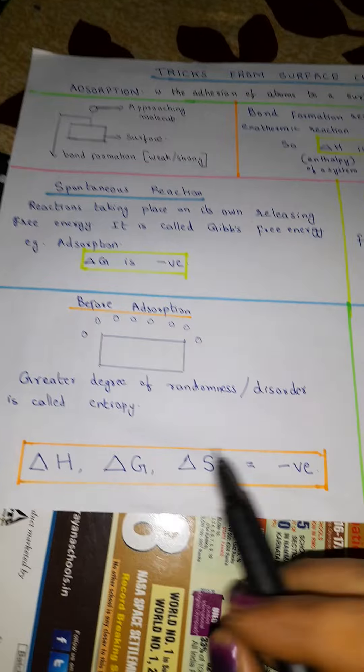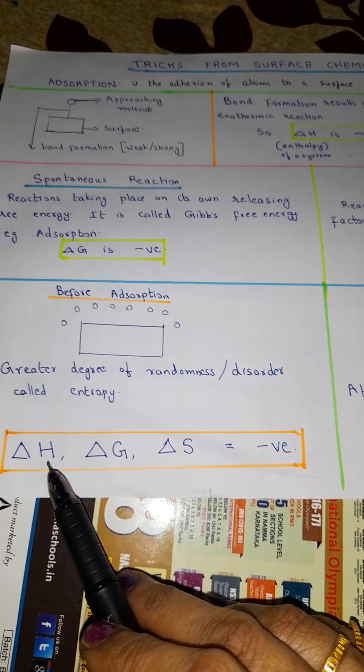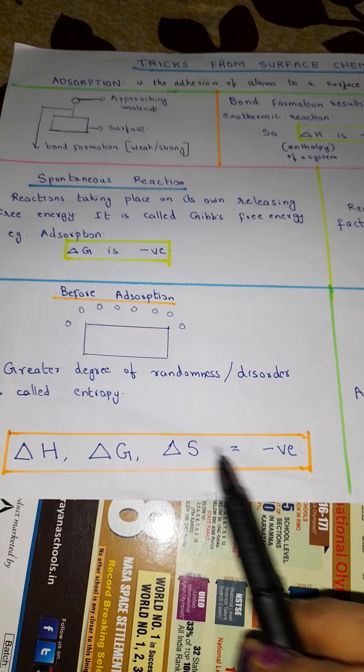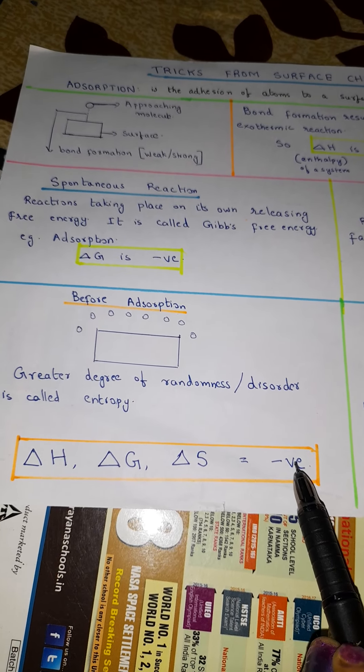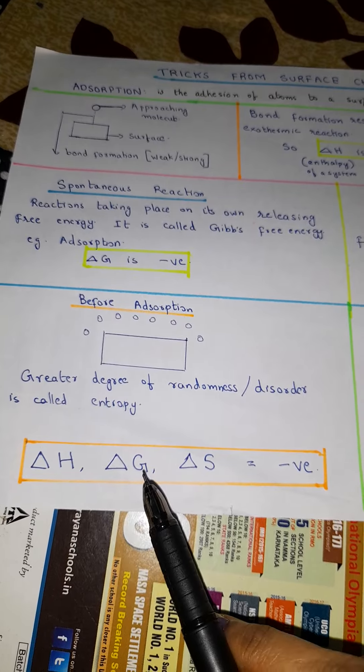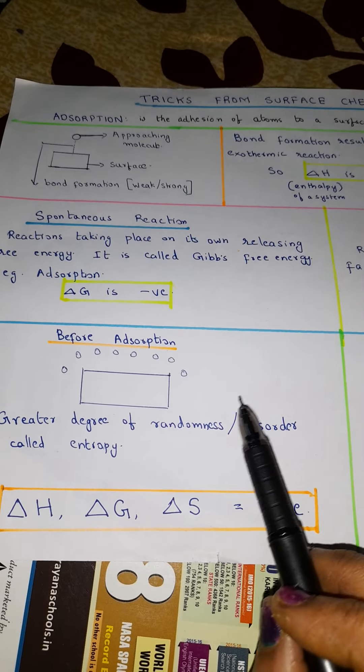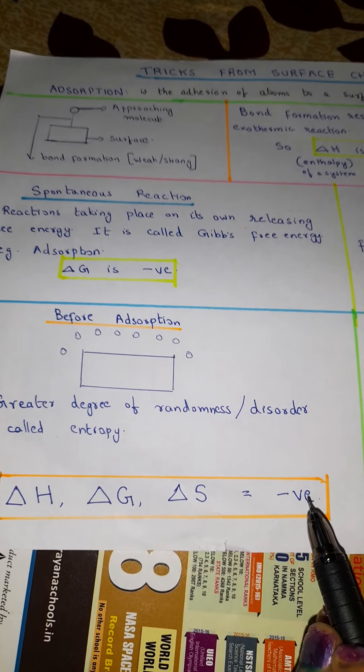So from this, what do we understand? We found out that three things: delta H, delta G, delta S, these are always negative. So for exams, remember if you are asked about delta H, delta G and delta S, you can easily write these are all negative.